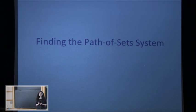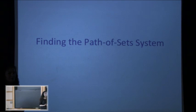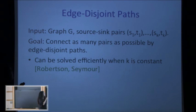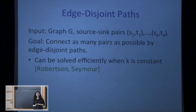This finishes the part where we go from the path-of-set system to the grid minor. Now I want to talk about how we find this path-of-set system. I'll take a detour and talk briefly about routing problems, because it was the work on these routing problems that led to this proof.